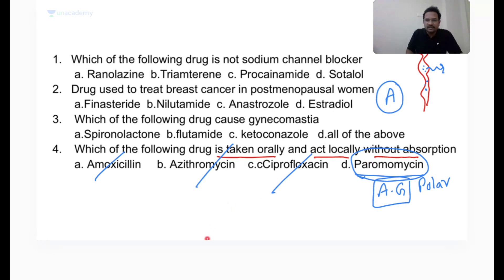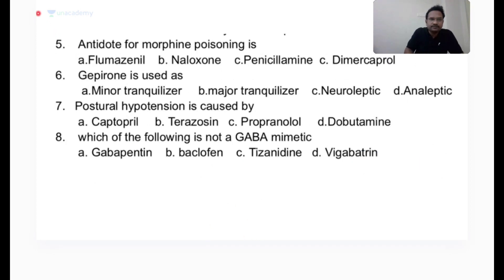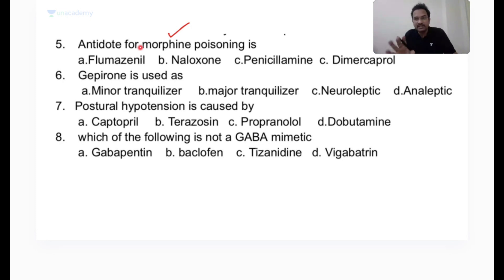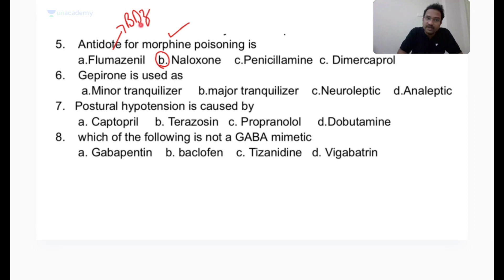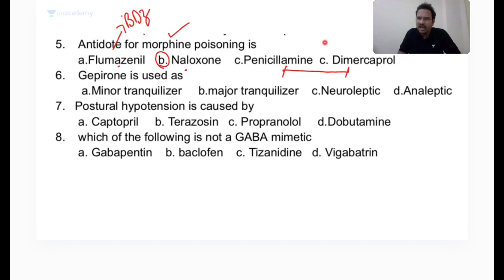Antidote for morphine poisoning: morphine binds to opioid receptors and can cause respiratory failure. The antidote is naloxone, which is a morphine antagonist. Flumazenil is the antidote for benzodiazepine toxicity. Penicillamine and dimercaprol are antidotes used for heavy metal toxicity.